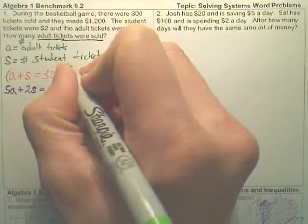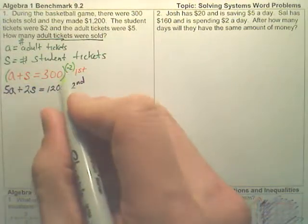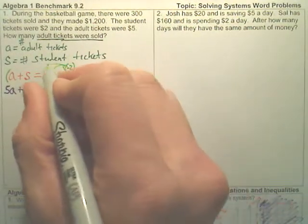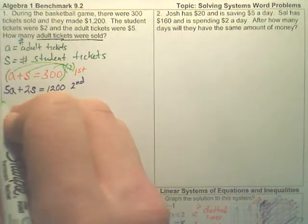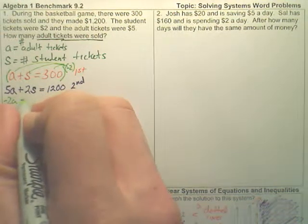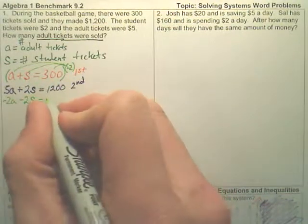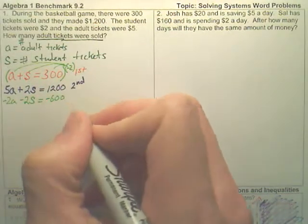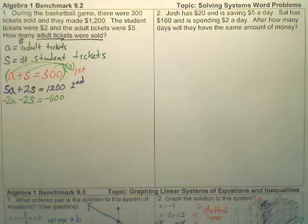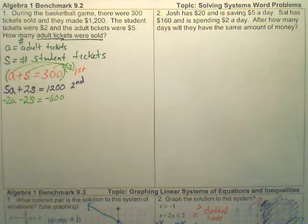It's not a power, but I'm going to multiply this by negative 2. So I'm going to multiply everything here by negative 2. So I get negative 2A minus 2S equals negative 600. That is now, that is the first equation multiplied by negative 2.